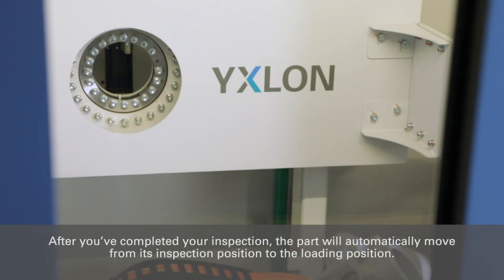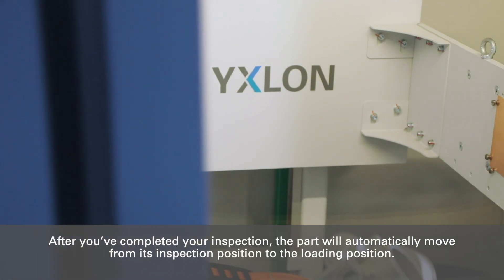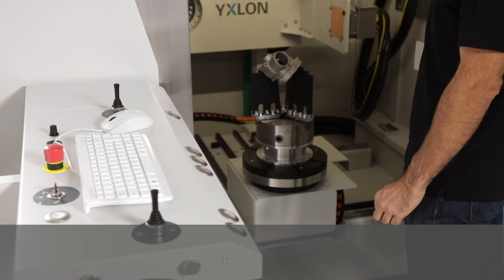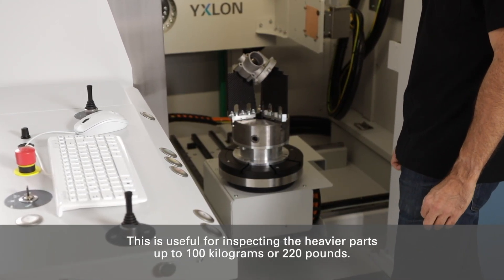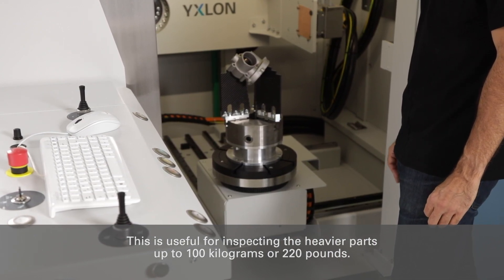After you've completed your inspection, the part will automatically move from its inspection position to the loading position. This is useful for inspecting heavier parts up to 100 kilograms or 220 pounds.